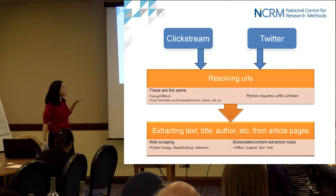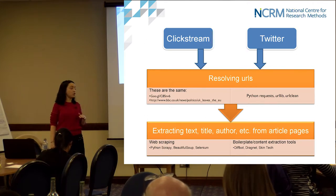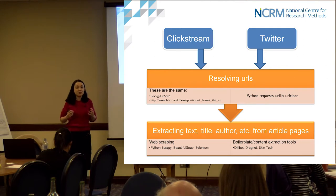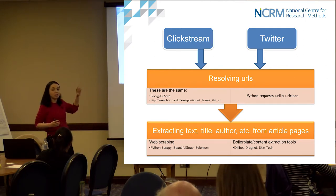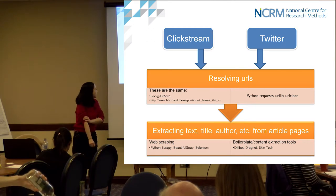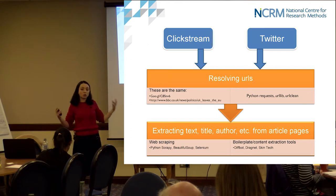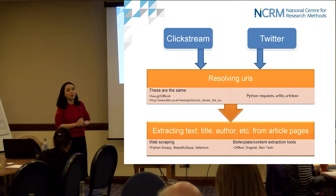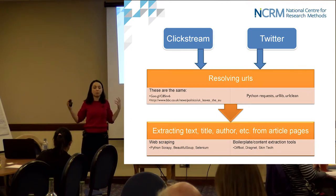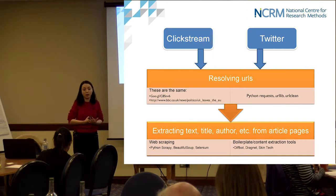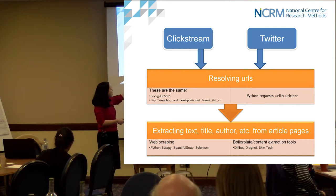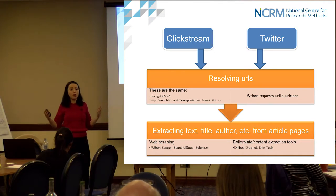The next step is extracting the text, title, and author from the article pages. You can do this manually by writing your own scraping script using tools like Python Scrapy, BeautifulSoup, or Selenium. Or, when you have 460 domains all with different structures, it makes more sense to use a tool already written and tested by someone. We took the easy way out and used Diffbot, which is free for your first 10,000 URLs.